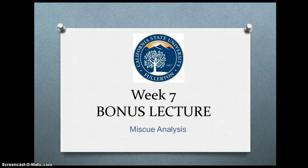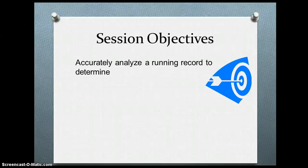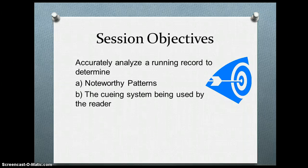Hello, this is our week 7 bonus lecture. Last week's bonus lecture discussed running records and how to accurately record the student's reading behavior to give a running record in the instance that you wanted to use this excellent informal assessment to measure the student's ability to recognize words in context. This week we are taking a look at how to analyze the running record, specifically to do a miscue analysis. Our one objective is to accurately analyze a running record to determine: a) noteworthy patterns, and b) the cueing system being used by the reader.